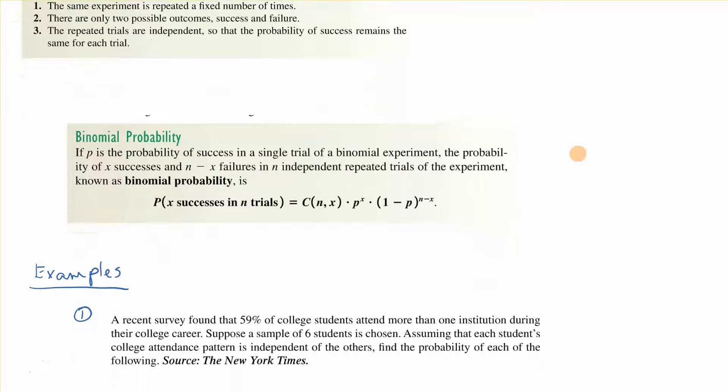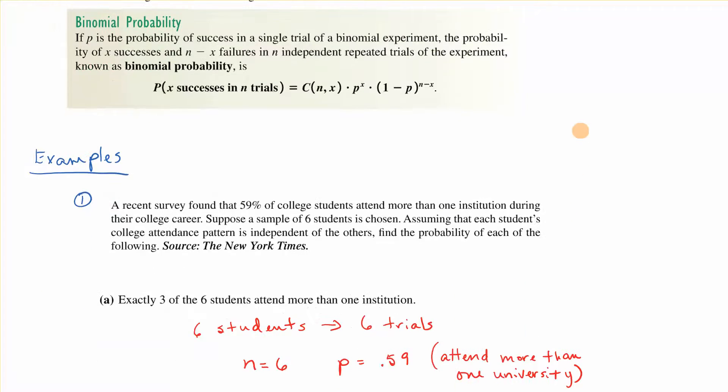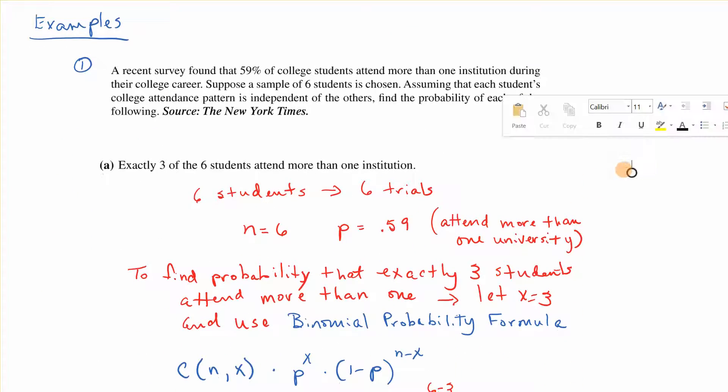The formula is here and you'll be referring to that when you work the few problems that we're going to do. Here's the formula where P to the X is the probability of a single incident and then you fill in the rest. So let's put that into play and look what it looks like in a problem.